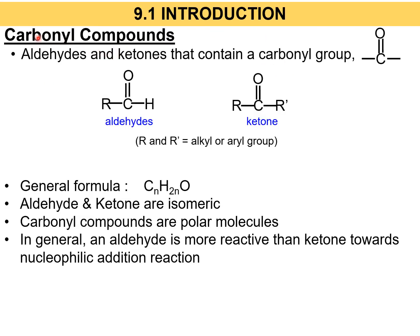Carbonate compounds are basically divided into two: they can either be aldehydes or ketones. However, since both aldehydes and ketones share the same functional group, which is the carbonyl group C=O, that's why they both fall under carbonate compounds.